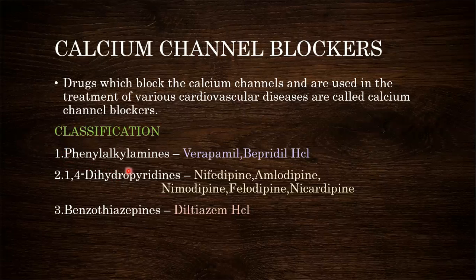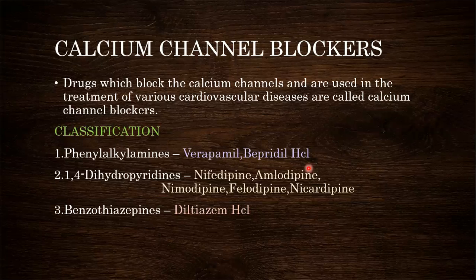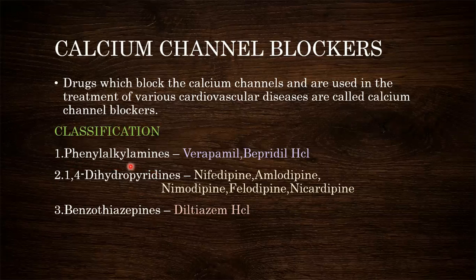The first class of calcium channel blockers is phenylalkyl amines. Examples are verapamil and bepridyl hydrochloride. In this class, a phenyl group is present, an alkyl side chain is present, and to this alkyl side chain an amine group is present — that is the basic structure of phenylalkyl amines.